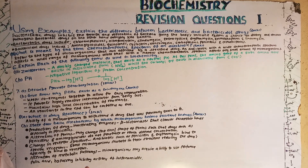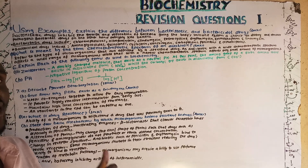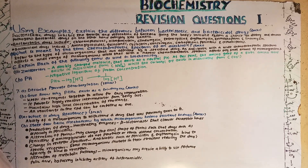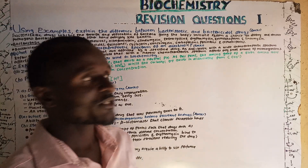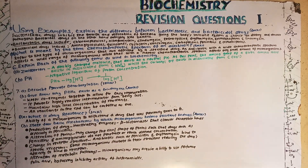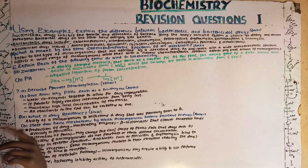Bacteriostatic — from the word 'static,' meaning to inhibit — so bacteriostatic drugs inhibit the growth and replication of microorganisms. Their significance is to give the body's immune system a chance to destroy a given microorganism.